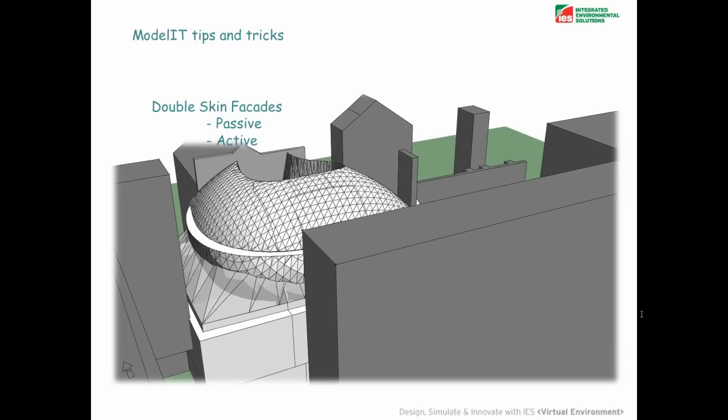You can also look at double skin facades and how to model these — I'll show you that in a moment. We'll also use the example of pitched roofs to demonstrate how you can quickly cut pitched roofs into multiple zones within the model itself, rather than doing it one room at a time.